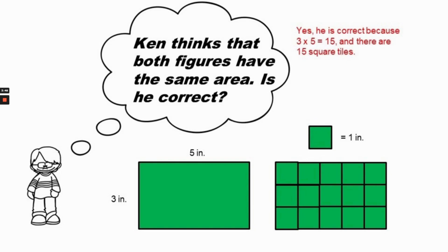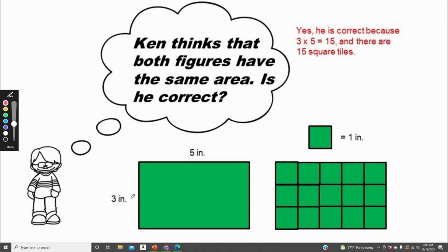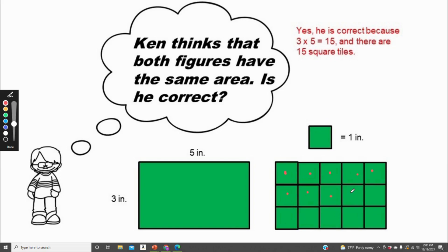Another way to find the answer is by counting the tiles: 5, 10, 15 — so that would be 15 square inches. Ken thinks that both of these figures have the same area. Is he correct? Yes, he is correct. In the first figure, three inches times five inches equals 15. In the second figure, counting the tiles gives 5, 10, 15 — again 15 square inches.